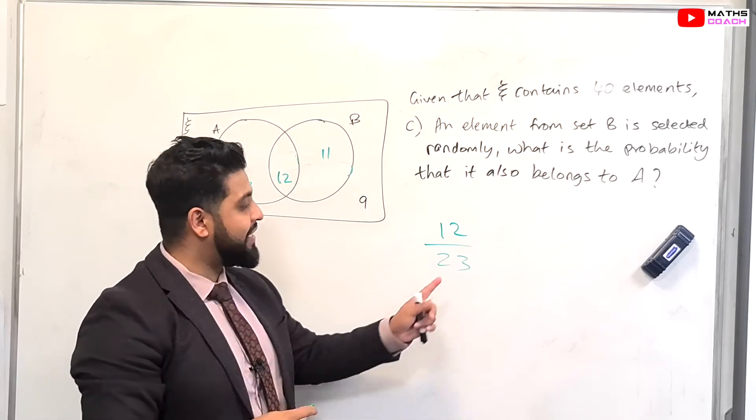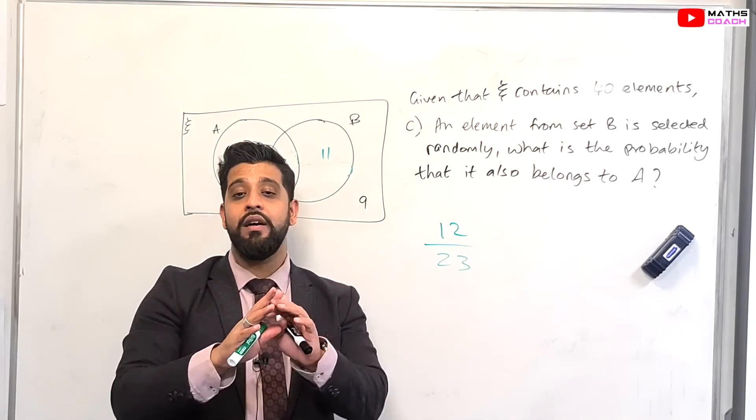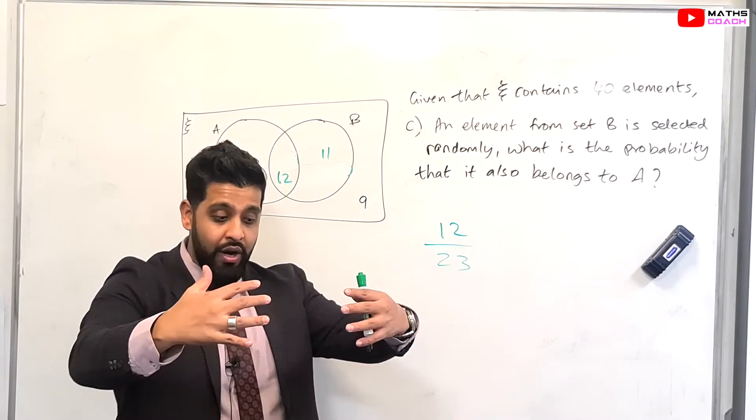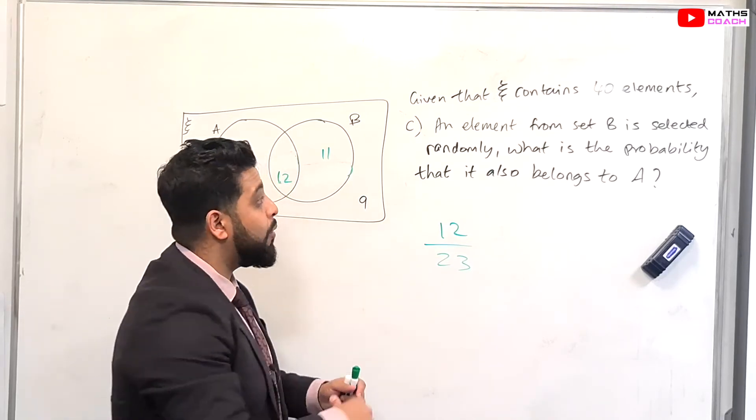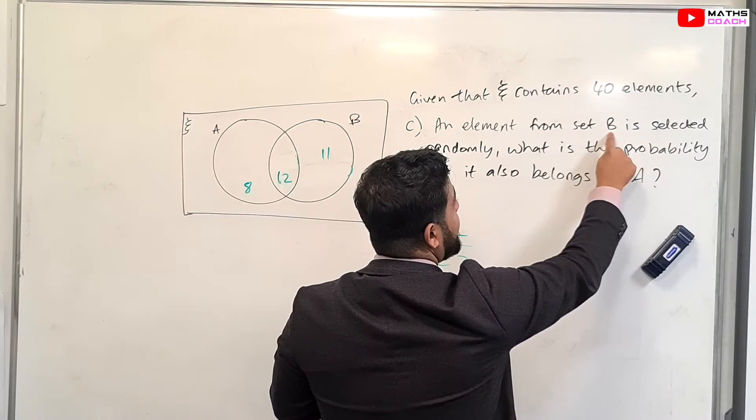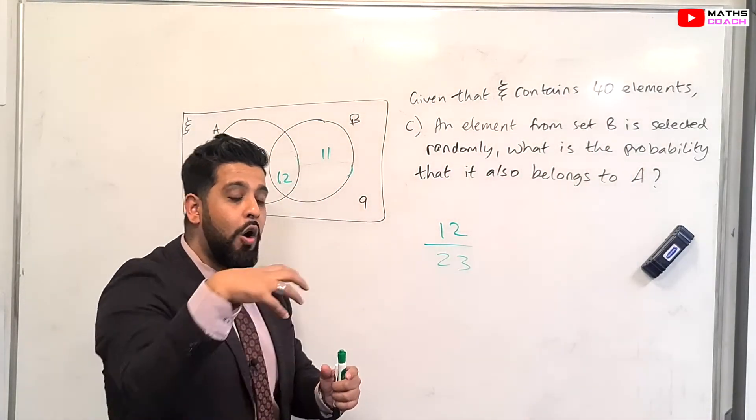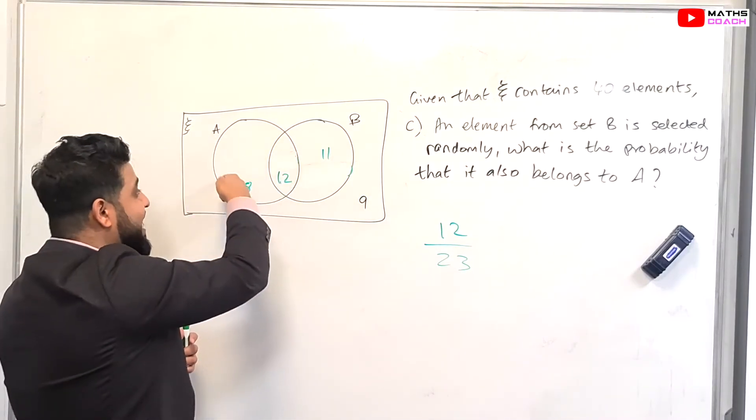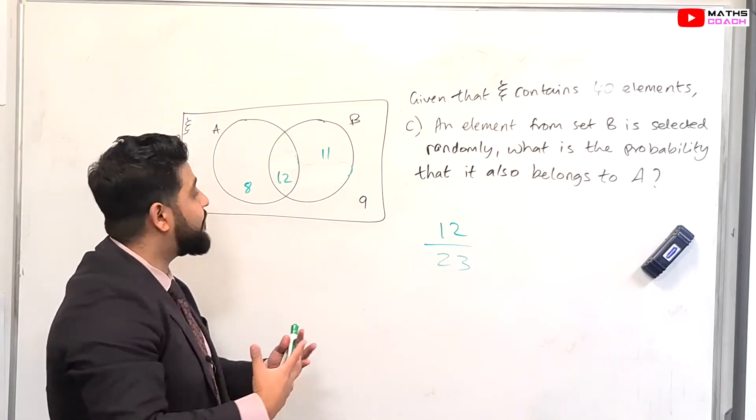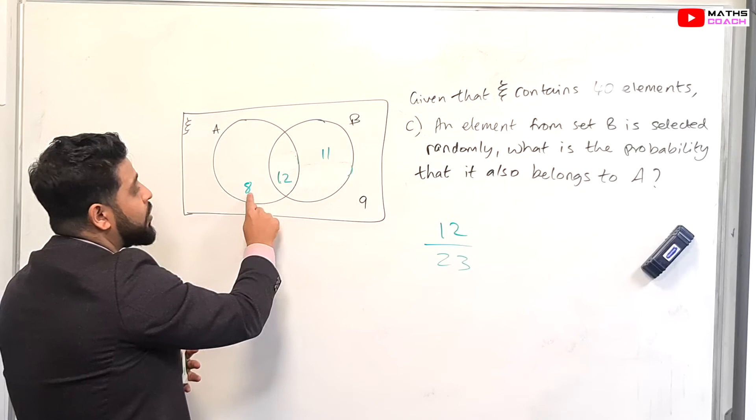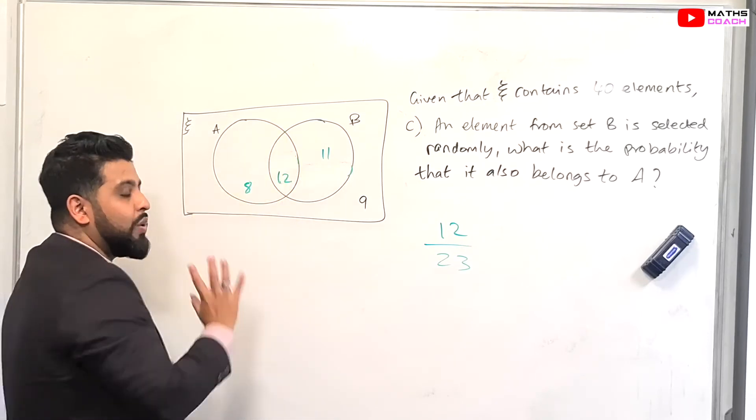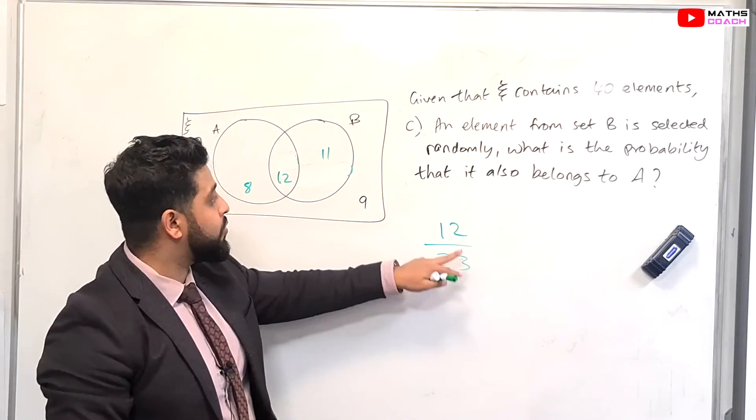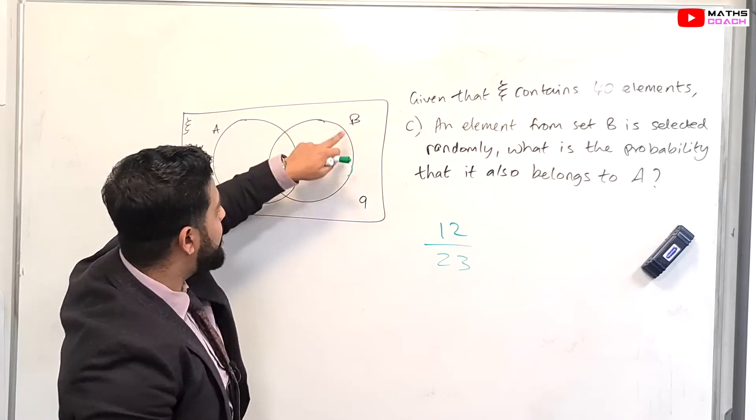Now, if you're wondering, how come we have a different denominator this time? Last time, the data was from the whole data set, which was 40. But this time, our data set is narrowed down. When it says a question, it's telling us that set B is selected randomly. That means only from within set B. We can only choose from within set B. Likewise, if it said to us, set A, given that set A, a data piece is selected from set A, then it will only be out of 20. Because in set A, there are only 20 pieces of data. So this is the reason that we have a different denominator this time, because we are told that the data is only from set B.